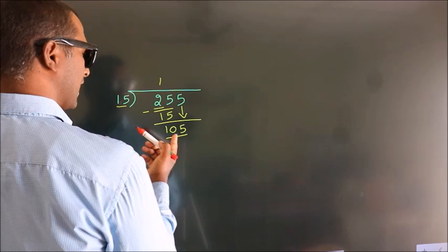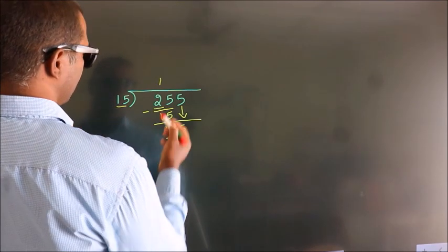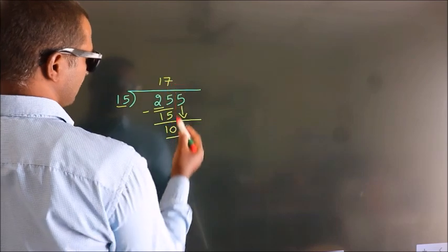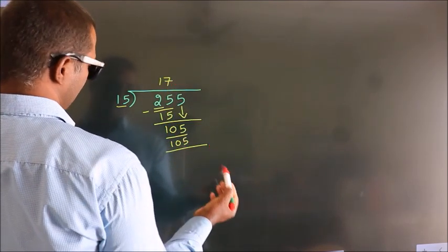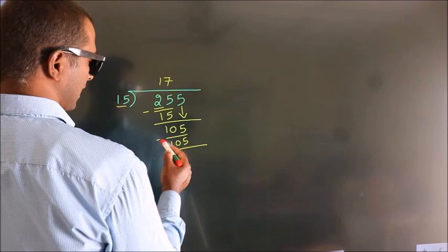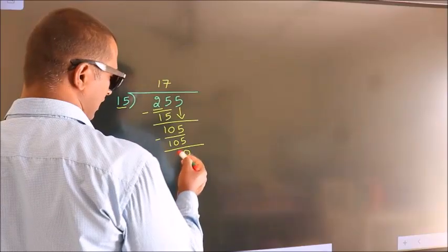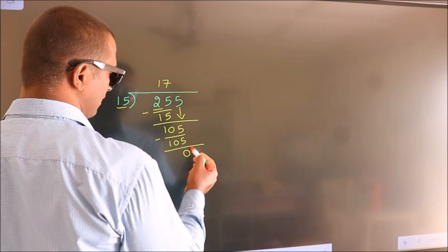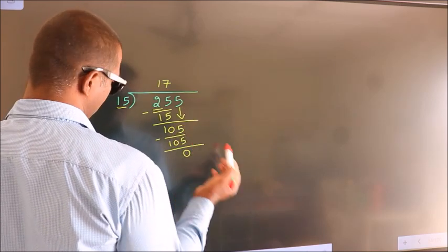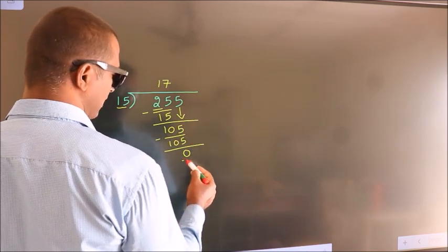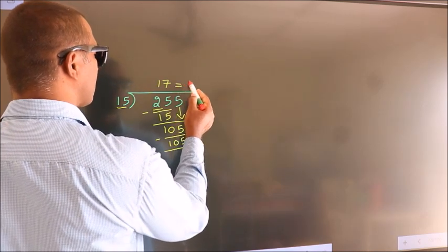When do we get 105 in the 15 table? 15 sevens are 105. Now we subtract. We get 0. After this, no more numbers to bring down and we got remainder 0. So this is our quotient.